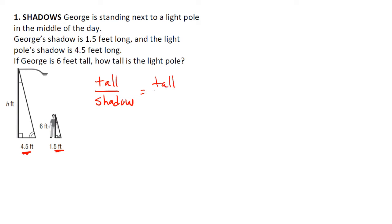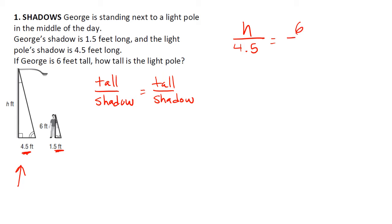It's going to be equal to tall over shadow for this one — that's our proportion. There are some different ways to set it up, but for the sake of this video, this is the way I'm going to do it. So I'm going to start with the flagpole. The height of the flagpole is h, and the shadow is 4.5. We know that's proportional to George — he's 6 feet tall and his shadow is 1.5.